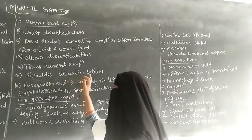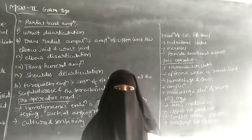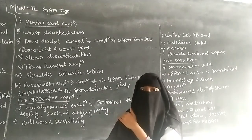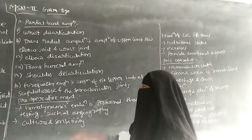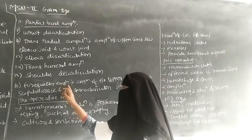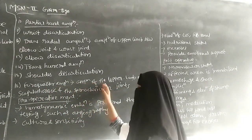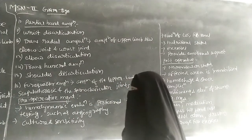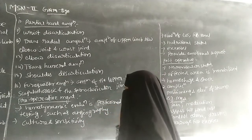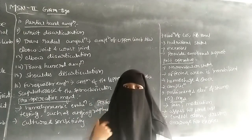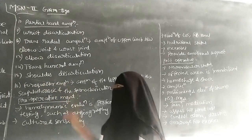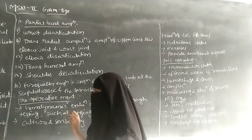Next is shoulder disarticulation, where up to the shoulder the limb has to be removed. The last level is forequarter amputation, which is amputation of the upper limb at the scapulothoracic level — from the sternoclavicular joint to the scapula, the entire limb has to be removed. This concludes the levels of amputation.